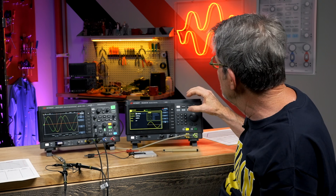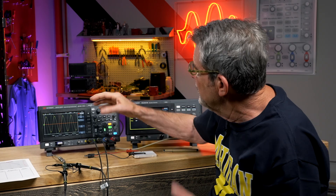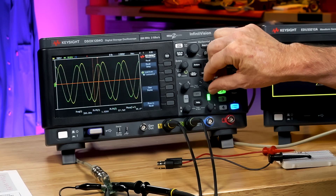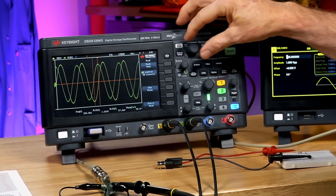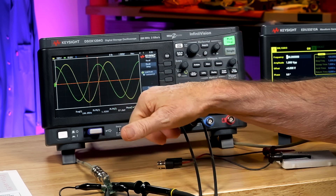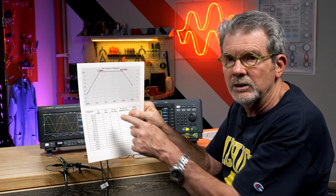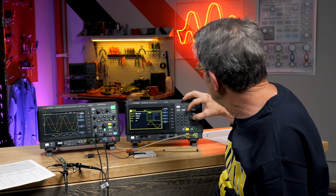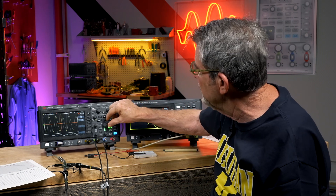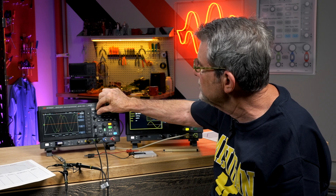The next step is to increase the frequency. At 200 Hz, I need to rescale channel two because it increased in amplitude, rescale the time base, take the measurement, and jot it down in my table — Vin, Vout, and phase. Phase changed to 86. And then you just step through all the way up to, in this case, 10 megahertz. Then plot the points.